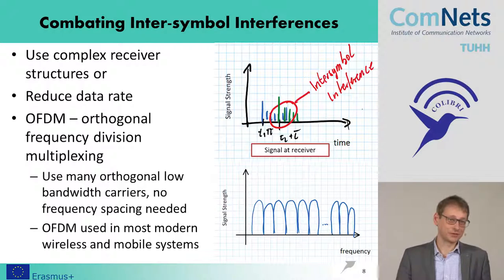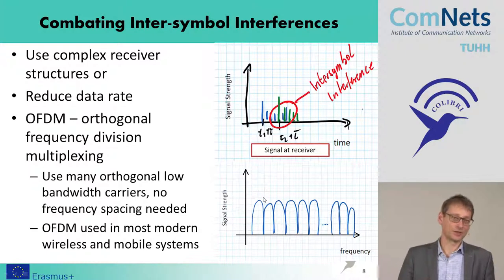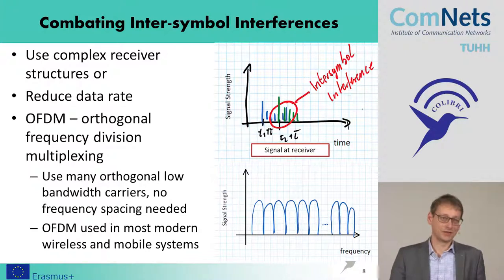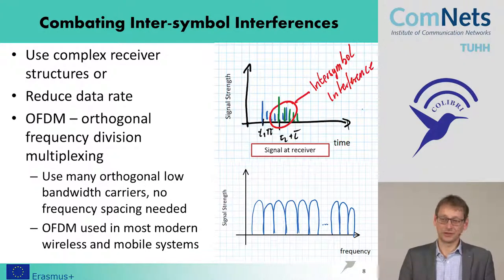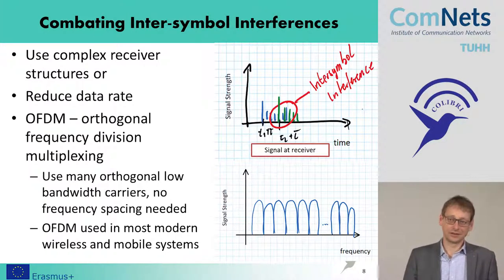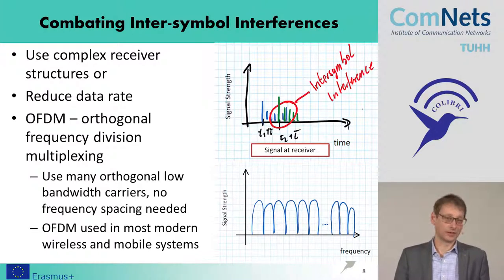Typically, in the frequency domain you need a guard band between the different transmitted signals in adjacent frequency bands. But if you design the transmitted signals to be orthogonal to each other, they do not interfere and no guard band is needed. That is what we do with Orthogonal Frequency Division Multiplexing (OFDM), and it is the scheme mainly used in all advanced high-speed mobile data systems in use today, such as wireless LAN and LTE.